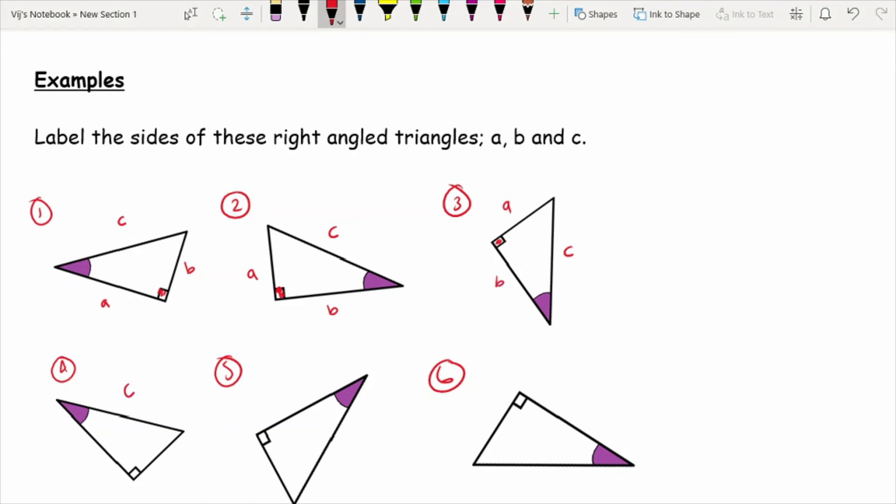For question four, this side is going to be C. And your other two sides are going to be A and B. For question five, this side is going to be C. This is going to be A. And this is going to be B.